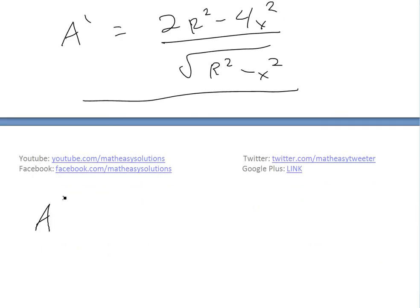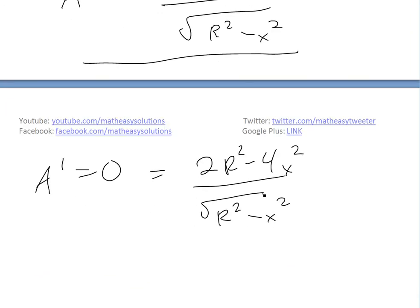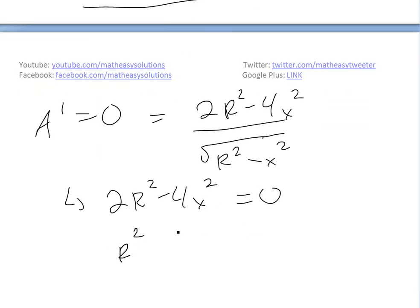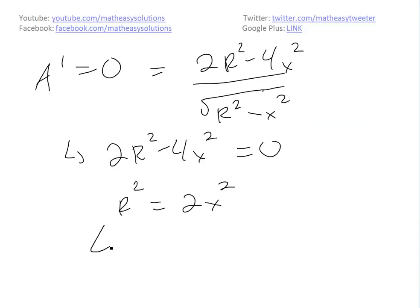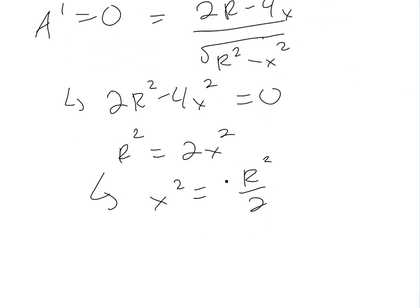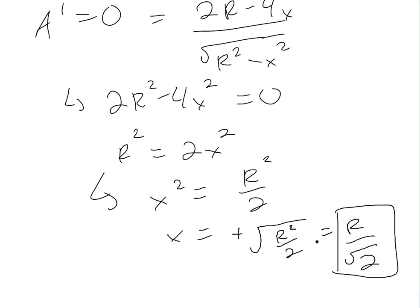Setting the derivative equal to zero, we cancel the denominator and get 2r² − 4x² = 0. Dividing by 2: r² = 2x², so x² = r²/2. Therefore x = r/√2 (taking the positive root). This is our only critical point.